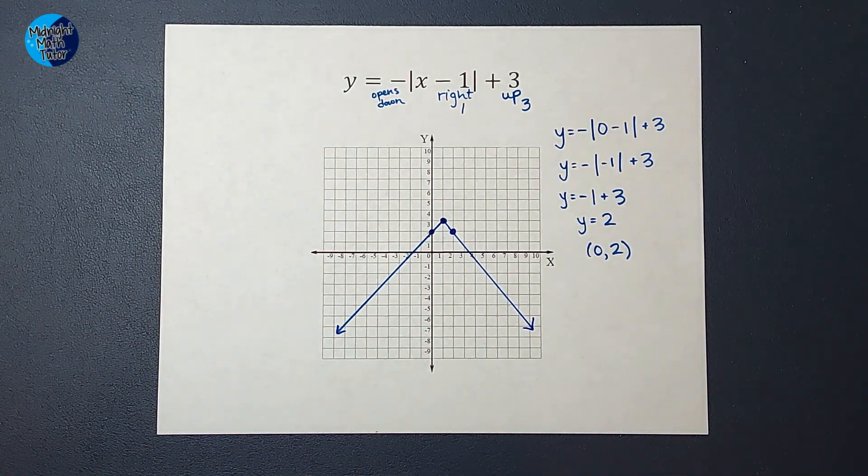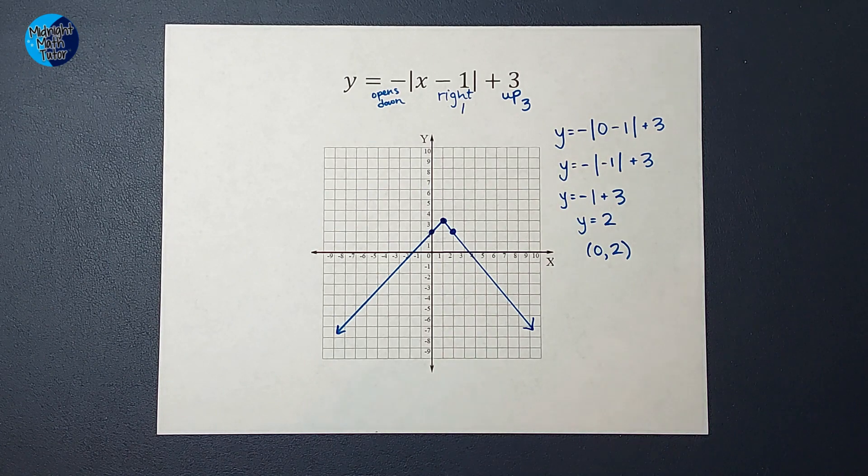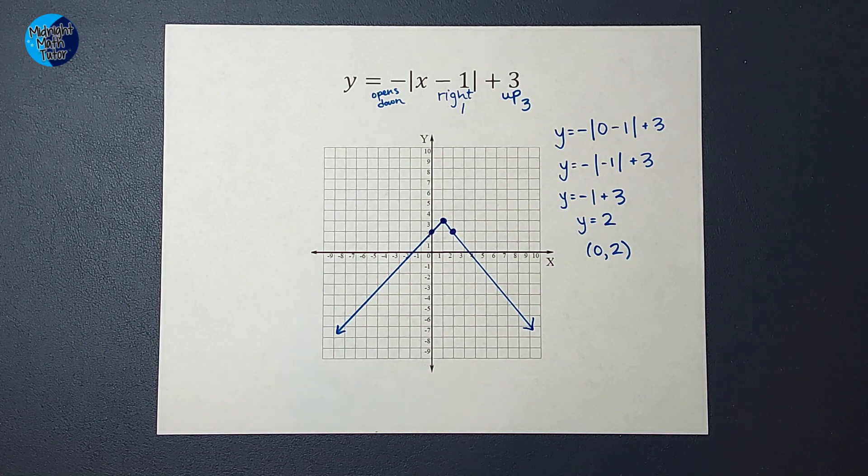All right, so that is what my absolute value graph looks like. Hopefully that made sense. If you need more examples, I'll link a whole playlist for you. Thanks, bye.